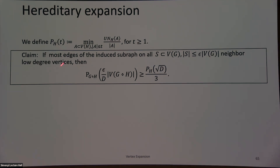I define ρ(H) to just count the number of unique neighbors — the ratio of unique neighbors to the size of the set. What they showed is that if most edges of my induced subgraph neighbor low-degree vertices, then the number of unique neighbors of my small graph H translates into unique neighbors of my line product.